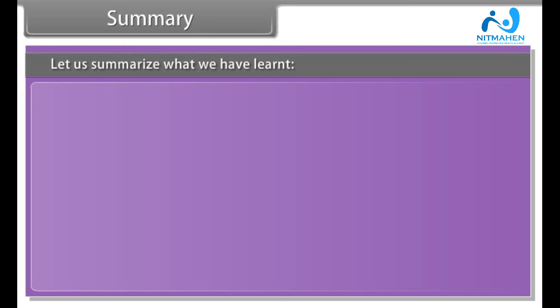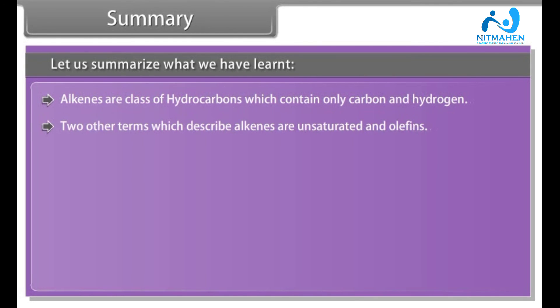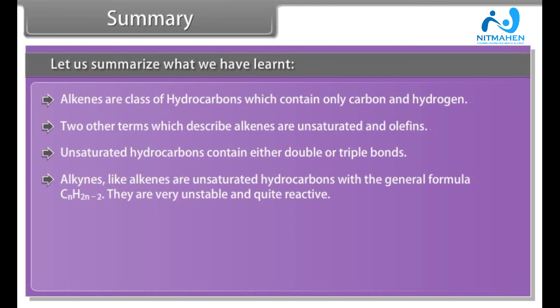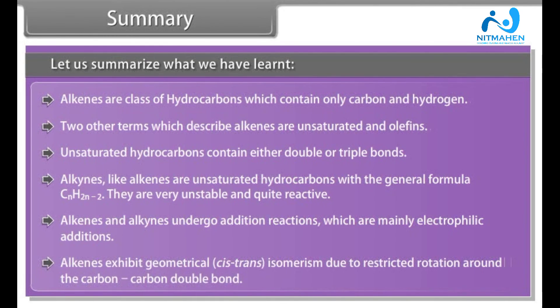Let us summarize what we have learnt. Alkenes are class of hydrocarbons which contain only carbon and hydrogen. Two other terms which describe alkenes are unsaturated and olefins. Unsaturated hydrocarbons contain either double or triple bonds. Alkynes, like alkenes, are unsaturated hydrocarbons with the general formula CnH2n-2. They are very unstable and quite reactive. Alkenes and alkynes undergo addition reactions, which are mainly electrophilic additions. Alkenes exhibit geometrical cis-trans isomerism due to restricted rotation around the carbon-carbon double bond.